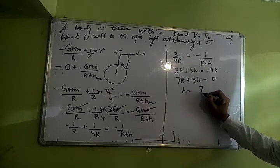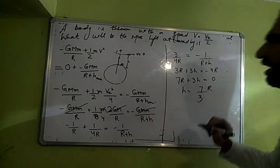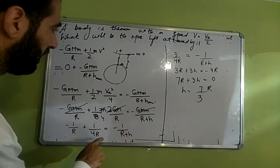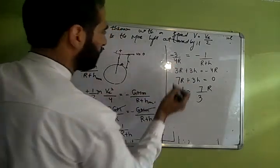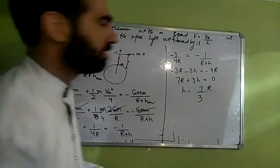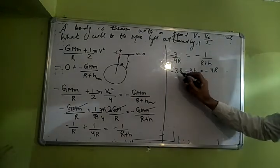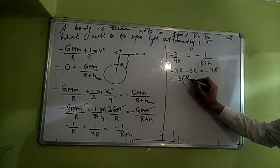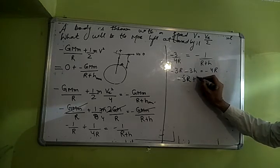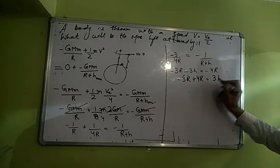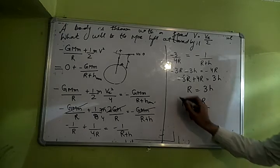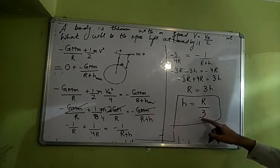h kya nikla? Shabash, 7 by 3 times r. Minus g capital M small m by r plus shabash yeh minus 4r aayega yahan pe. Minus 4r plus it is minus 3 by 4r, sorry. Ok then how much it will be? Minus 3r minus 3h is equal to minus 4. To kya ho jayega yahan pe? Yahan minus 3 common jab nikaloge, r plus h, sorry minus 3r plus 4r is equal to 3h. So r is equal to 3h. To h kitna nikla? r by 3.